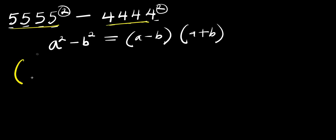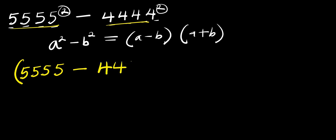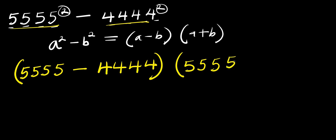So for a minus b I will have 5555 minus b which is 4444, times a again which is 5555 plus b which is 4444.